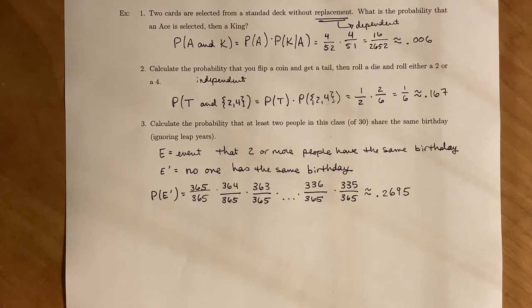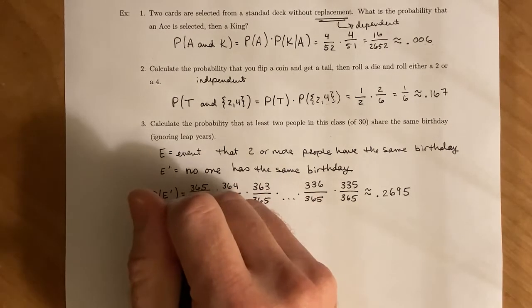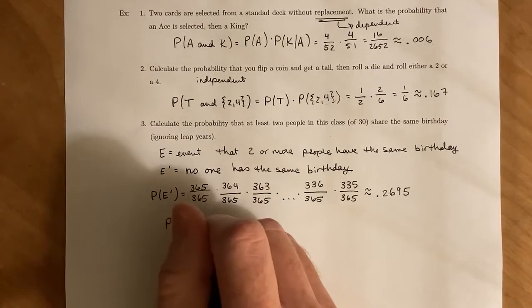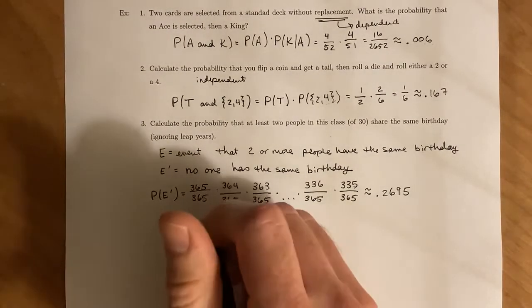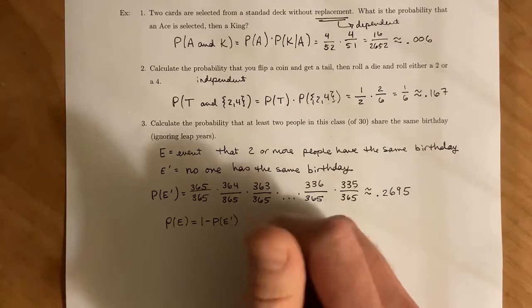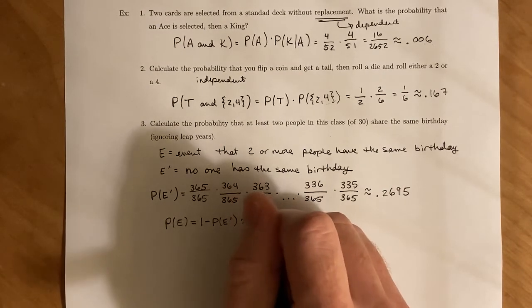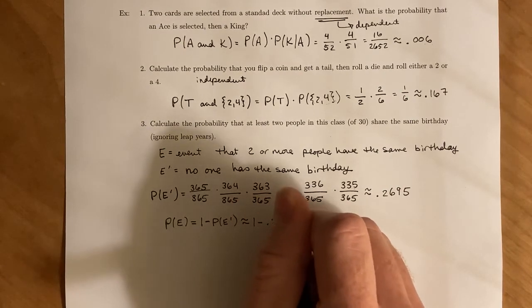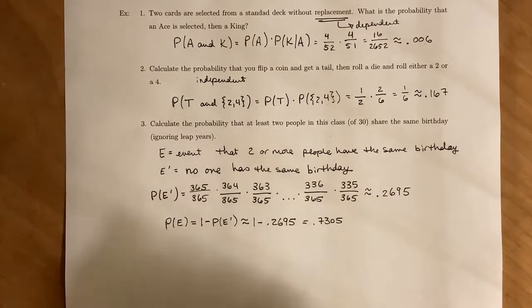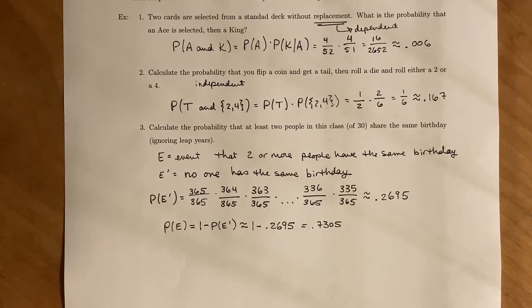And so since we want to figure out the event that two or more people have the same birthday, we're looking to find the probability of E, the event that we initially started with, which by that complement rule is going to be one minus the probability of the complement, which is roughly one minus 0.2695, which gives us 0.7305. So in your general class of 30 people, there's about a 73% likelihood that at least two people have the same exact birthday.